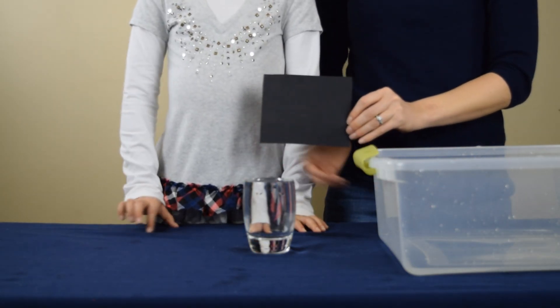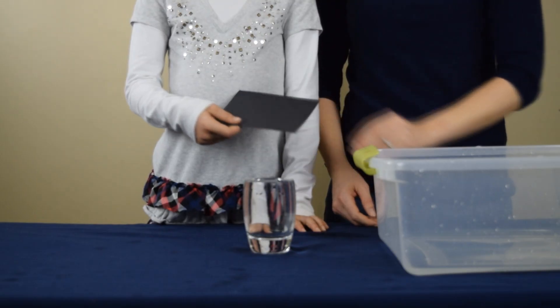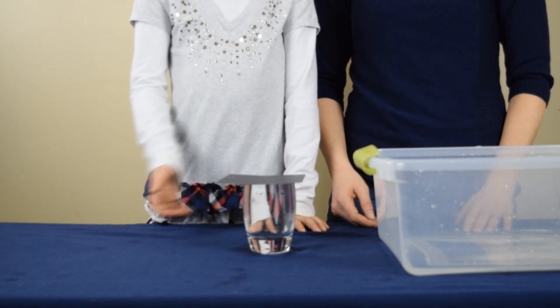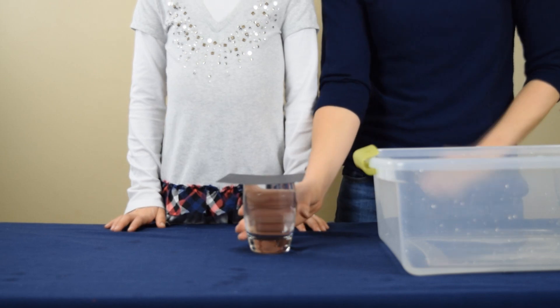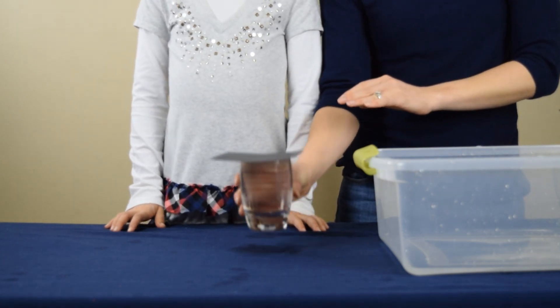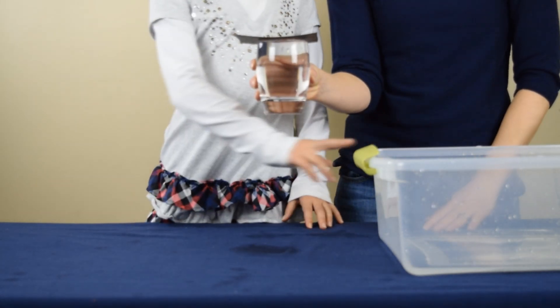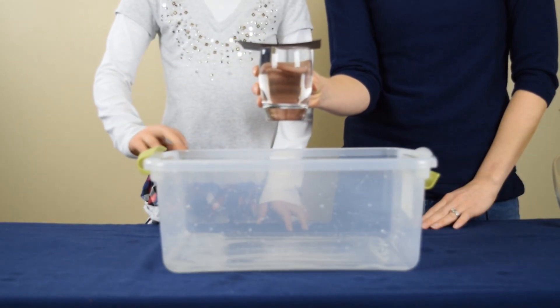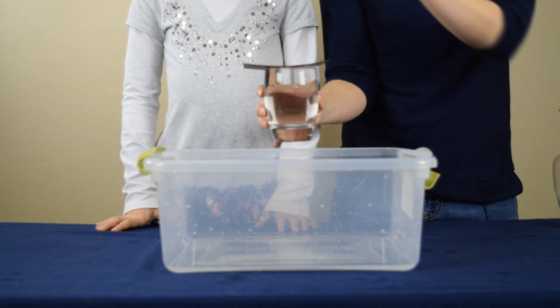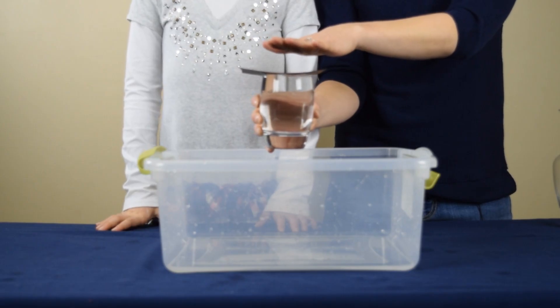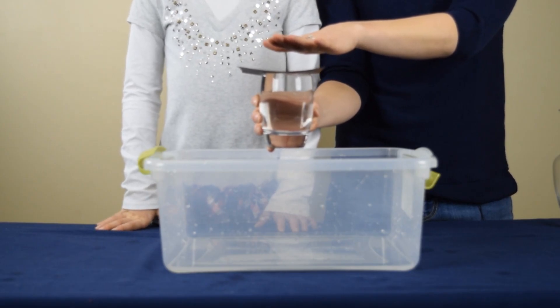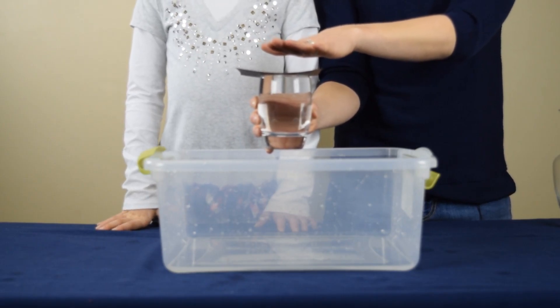We're going to take our poster board and place it on top of the glass. Now I'm going to slowly pick up the glass and have my daughter put the container underneath. Now I'm going to place my hand just gently on the paper, turn it over, and then remove my hand. Let's see what happens.